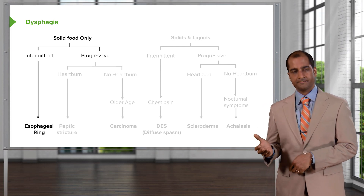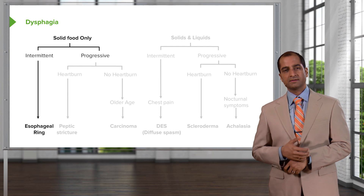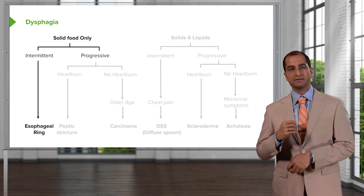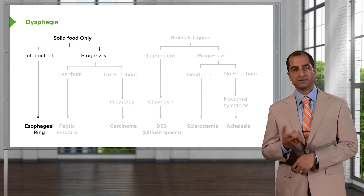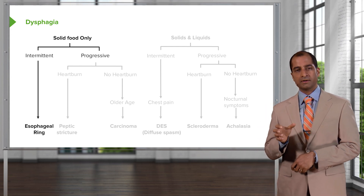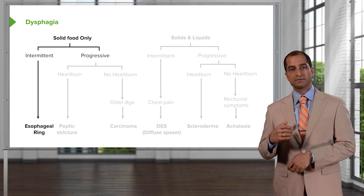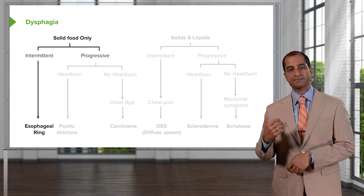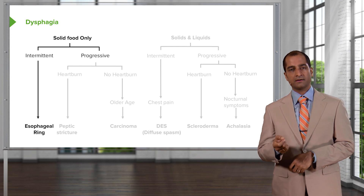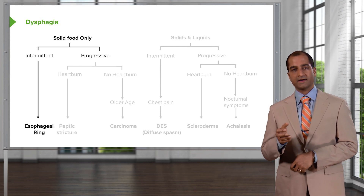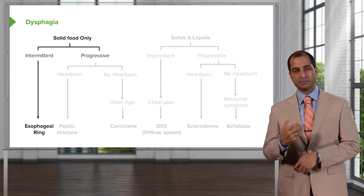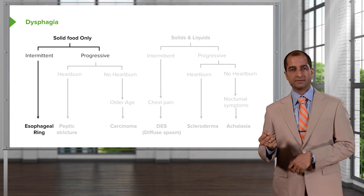And then it got to a point where I was having a hard time getting just about anything through. That's progressive. Initially the patient was having a hard time with solids because of their bulky nature, and as the obstruction started growing within the esophagus, it became more difficult for other substances to pass through — moving from solids toward liquids as the obstruction grows bigger.